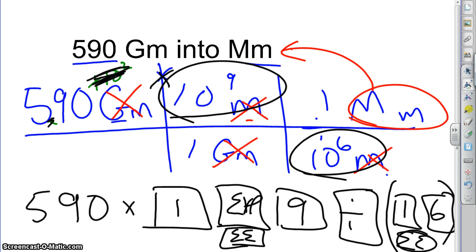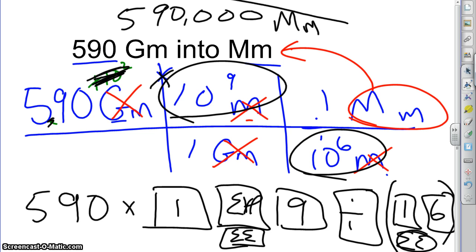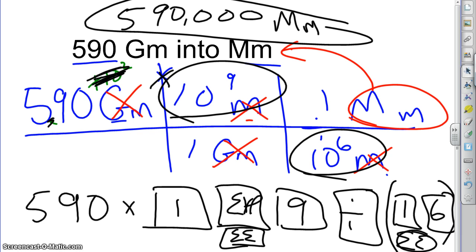Now let's talk about significant digits. When you have 590,000 as our answer, don't drop your unit. We need to check significant figures. The rule is that our conversions are not going to change the precision, so we want to keep the number of sig figs we started with. We started with 2 sig figs — the trailing zero in 590 is not significant, and neither are the zeros in 590,000 — so we kept 2 significant digits. We are good. That is how you would do that one.